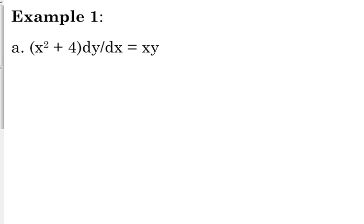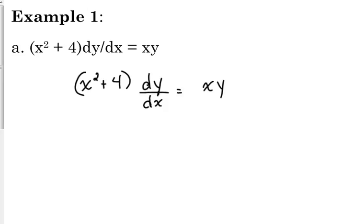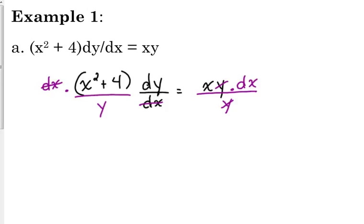So this problem is x squared plus 4 times dy over dx is equal to xy. It's most helpful to write this so you can actually see that the dy is on the top over the dx. To move the dx, we multiply both sides by dx. Now move it to the right side. We need y on the left side, so we divide both sides by y. And that x squared plus 4 has to move as a singular unit — divide both sides by x squared plus 4.